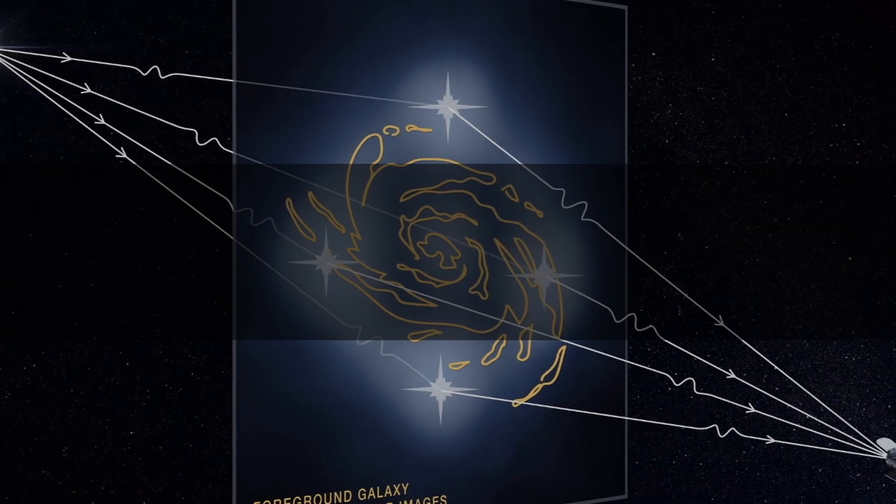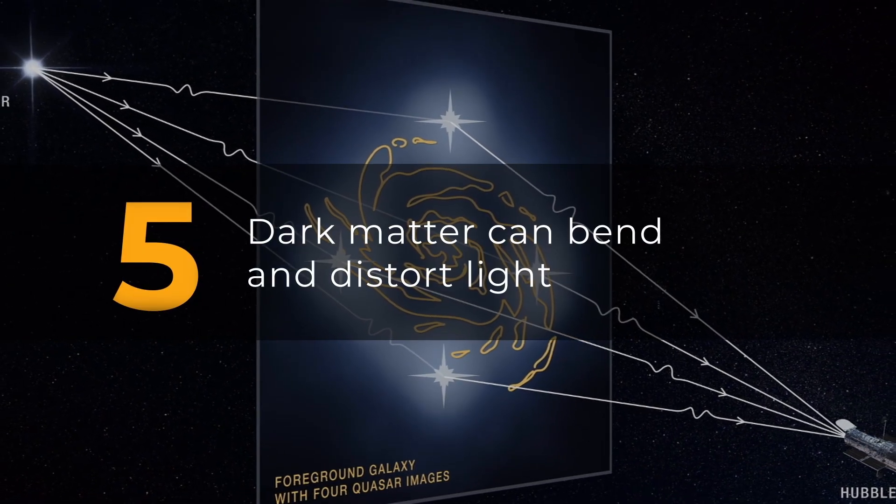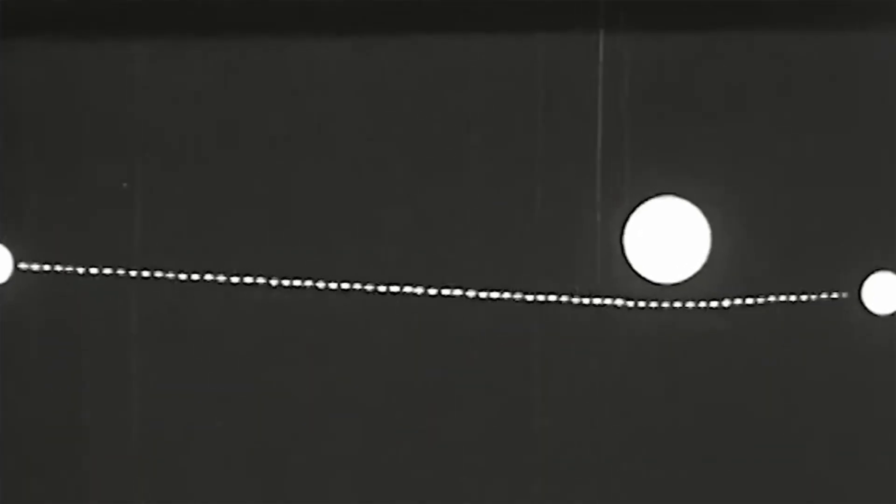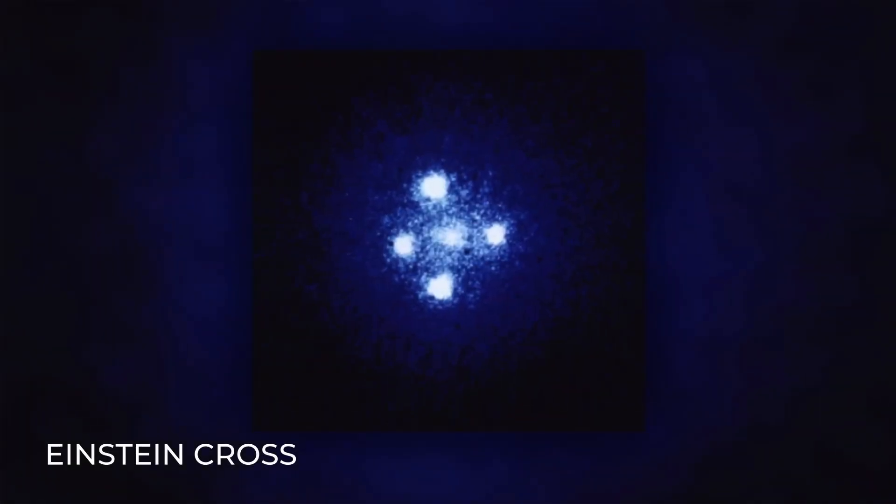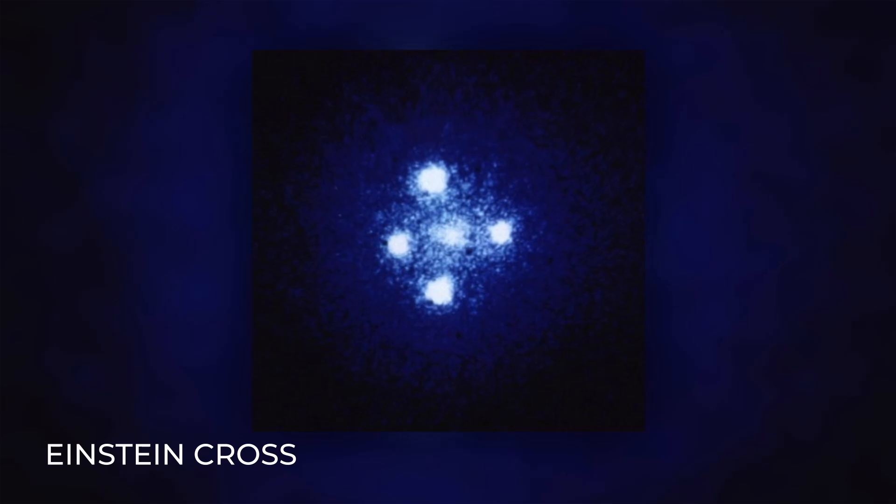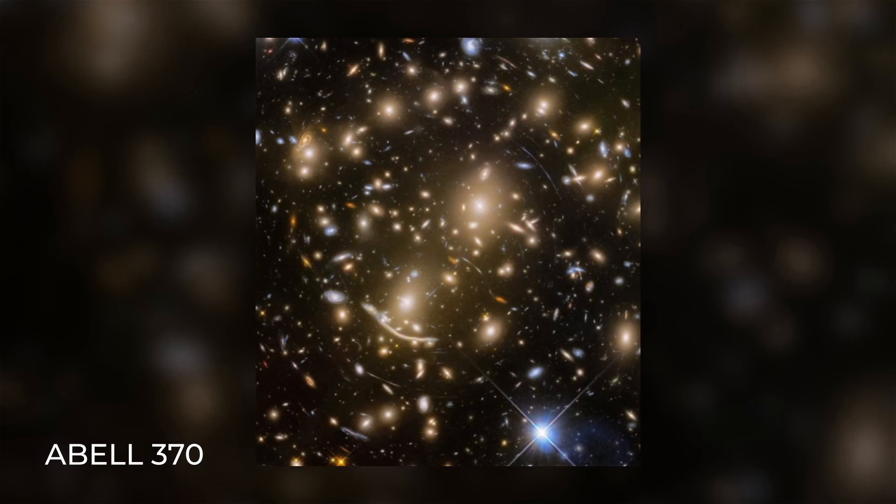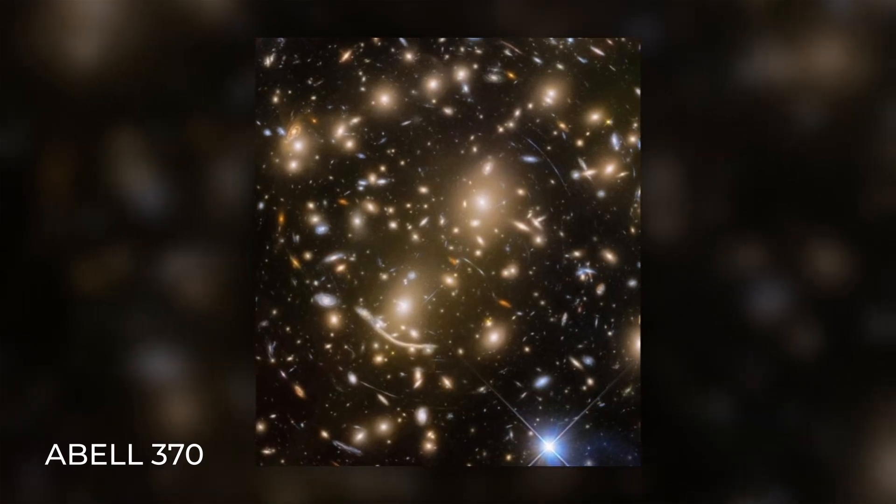Dark matter can bend and distort light through a phenomenon known as gravitational lensing. Gravitational lensing occurs when the path of light from a distant object is curved as it passes through a region with a strong gravitational field, such as a concentration of dark matter. This effect can distort and magnify the light from distant galaxies, allowing astronomers to map the distribution of dark matter.